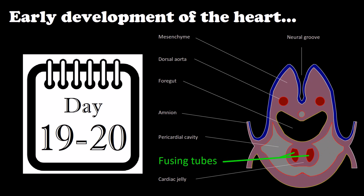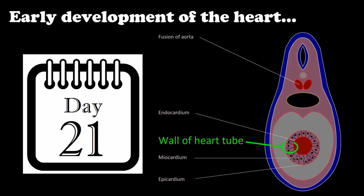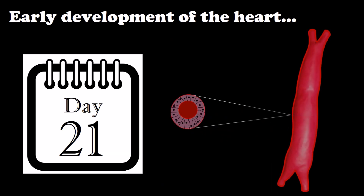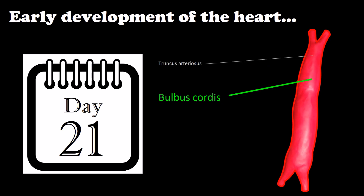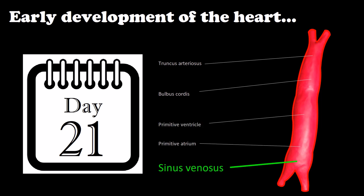These endocardial tubes migrate simultaneously to the internal portion and fuse together to create one primitive heart tube. In just a few days, a cardiac tube has been shaped with three perfectly differentiated histologic layers — endocardium, myocardium, and epicardium — and with five cavities: truncus arteriosus, bulbus cordis, primitive ventricle, primitive atrium, and sinus venosus.